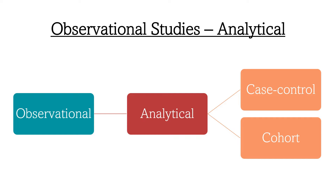Analytical studies, on the other hand, are performed to gather additional data after a descriptive study is finished. The data is then statistically analysed to test theories on the disease's likely cause or causes. Two indicators that can be employed in these investigations are morbidity — the number of cases of the disease — and mortality — the proportion of the population that dies from the condition. These studies also assemble information on the prevalence, the total number of individuals affected at any one moment, and the incidence, the number of new cases in a given time period.